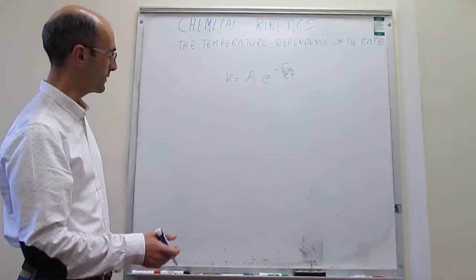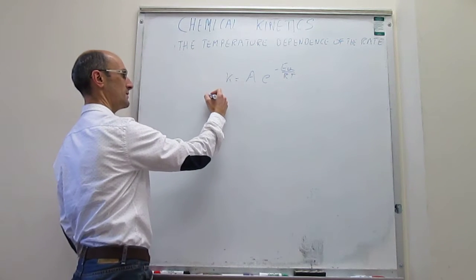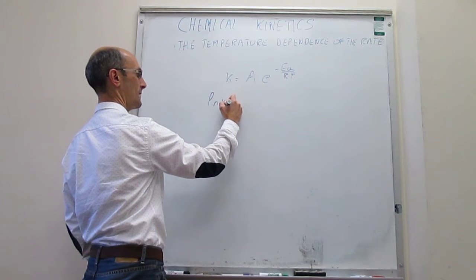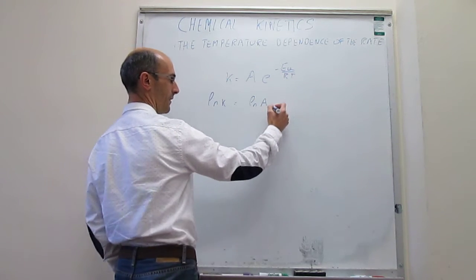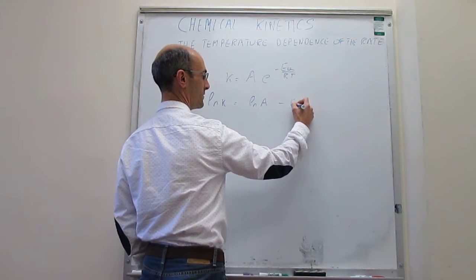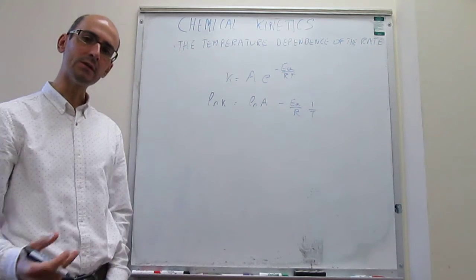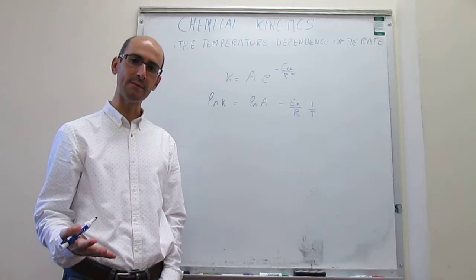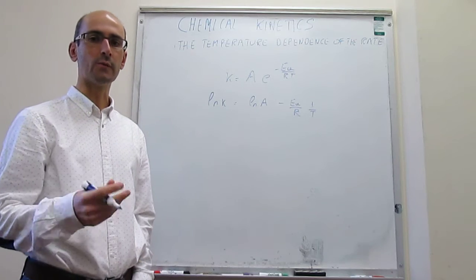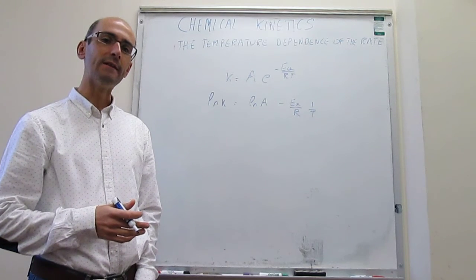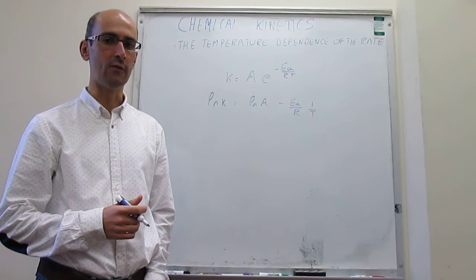To do that, what we actually start with is the logarithmic form of this expression, which is: natural log of k is equal to the natural log of the pre-exponential factor minus the activation energy over the gas constant, times one over T. So what we're going to do is write this expression for two different temperatures, and then consolidate those expressions so that we can come up with one equation that relates two rate constants with the temperatures at which those rate constants are.